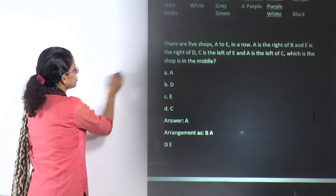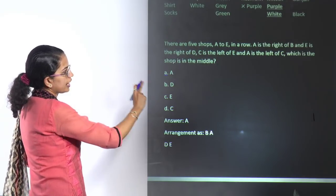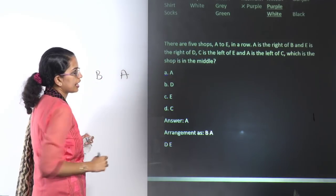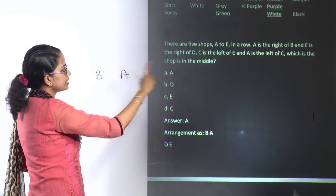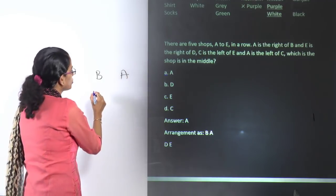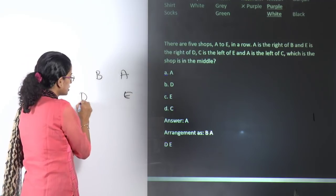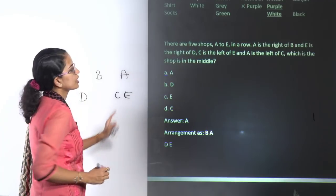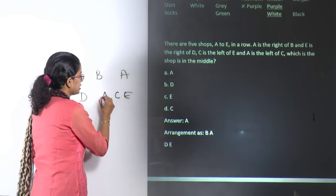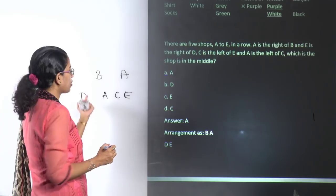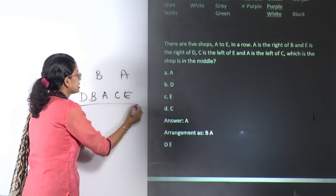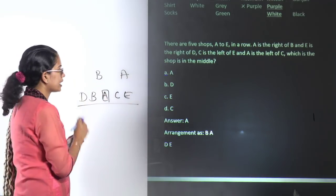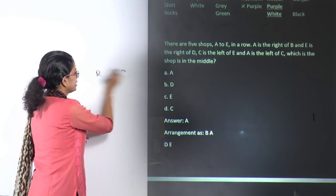Let's repeat: A is to the right of B, so mark B then A to its right. E is to the right of D. C is to the left of E. A is to the left of C. B is to the left of A. So the full arrangement is B–A–C–D–E, and A is in the middle — the correct answer.